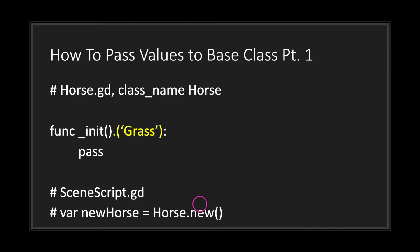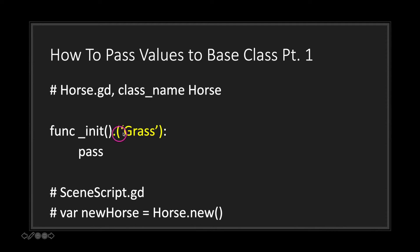If you want to pass a value to your base class from your subclass, all you have to do is call the initialize function in your subclass. After the initialize function you use the dot notation followed by a value inside the parentheses that you want to pass to your super class. Every time you create a horse class object, you initialize your horse class with the grass literal value and pass that to the food variable.